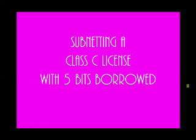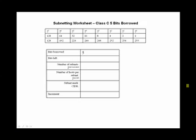In this example, I'm going to subnet a Class C license with 5 bits borrowed. You can see that I've indicated that on my worksheet, and I've also circled or highlighted that 5th position over from the left, counting 1, 2, 3, 4, 5, to get that 5th position to highlight.